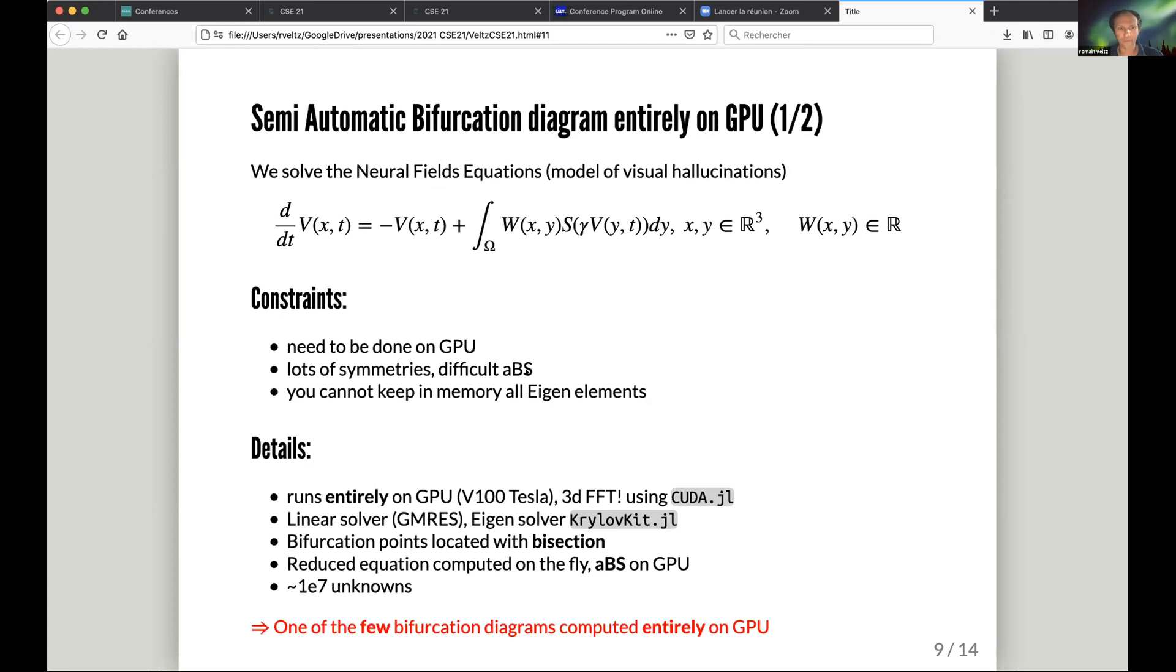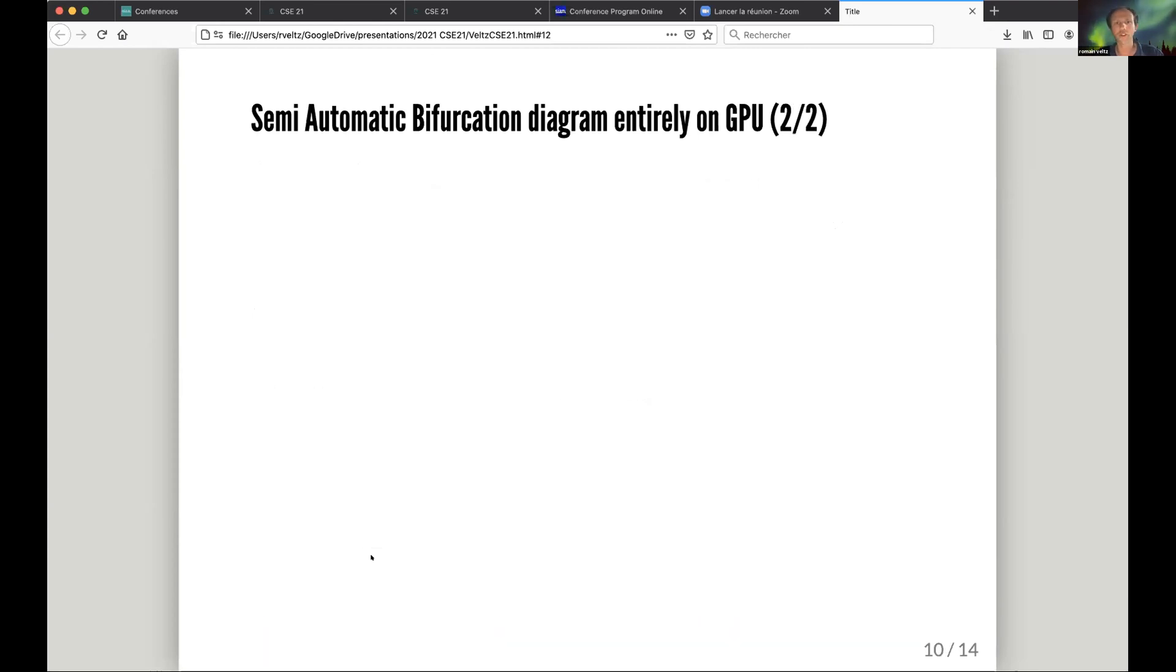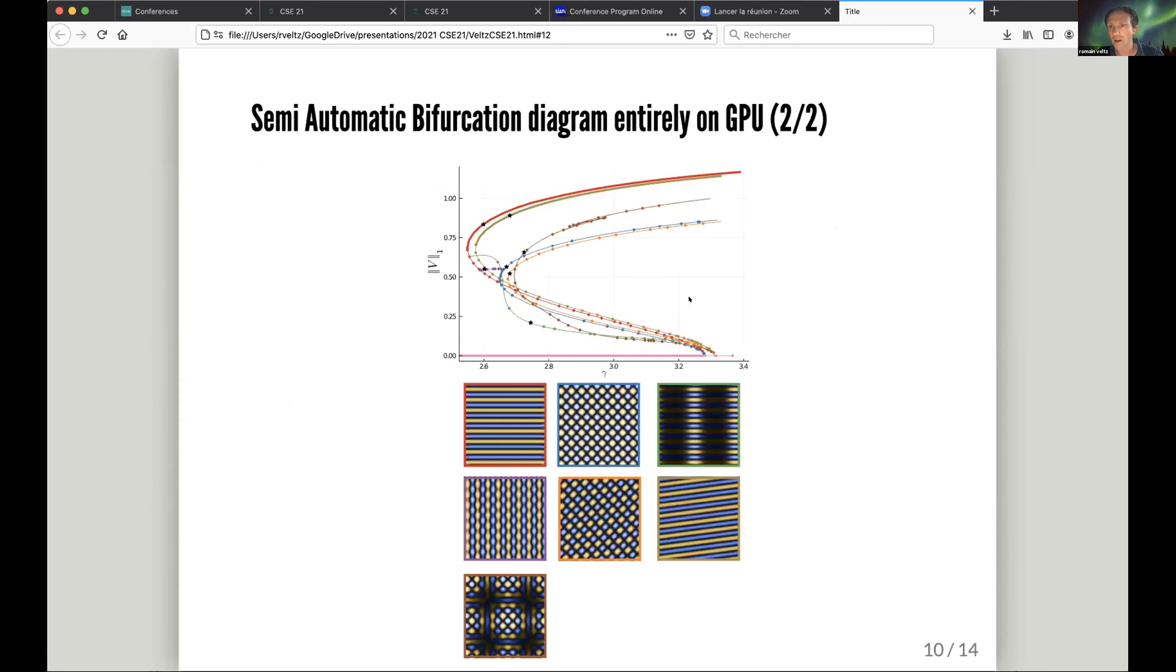I disengage the automatic bifurcation diagram, and the thing runs entirely on a V100 Tesla card using CUDA.jl, iterative solvers from KrylovKit, bifurcation point location with bisection algorithm, the reduced equation, and automatic transcription is done on the fly. For 10 million unknowns, it's one of the few bifurcation diagrams I know done on the GPU. The result is here, and you can see that in this case I have an eight-dimensional bifurcation point here, this one is four-dimensional, and you can see all the bifurcation points from which other branches will emerge with new bifurcations.